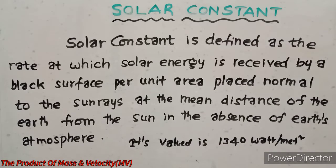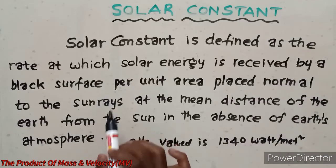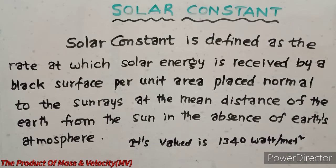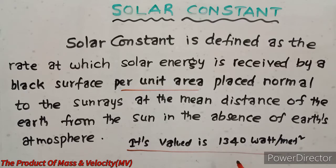We are going to discuss solar constant and its determination. Solar constant is defined as the rate at which solar energy is received by a black surface per unit area, placed normal to the sunrise at the mean distance of the Earth from the Sun, in the absence of Earth's atmosphere. Generally its value is 1340 watts per meter square.